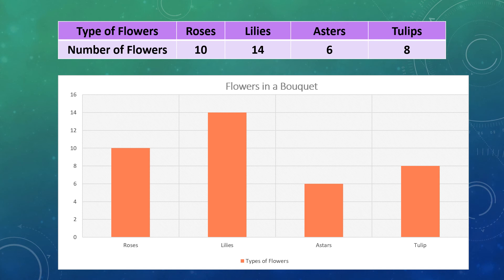Now, label the x and y-axis. Here, the types of flowers are represented on the x-axis, and the number of flowers is represented on the y-axis.